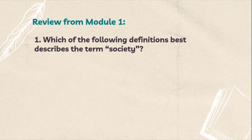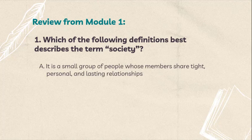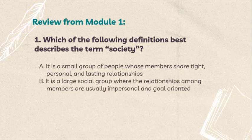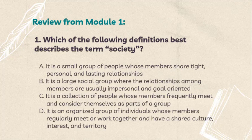A little review from Lesson 1. Answer the following questions. Question number 1: Which of the following definitions best describes the term society? A. It is a small group of people whose members share tight, personal, and lasting relationships. B. It is a large social group where the relationships among members are usually impersonal and goal-oriented. C. It is a collection of people whose members frequently meet and consider themselves as parts of a group. D. It is an organized group of individuals whose members regularly meet or work together and have a shared culture, interest, and territory. The correct answer is letter D.